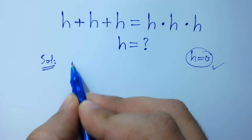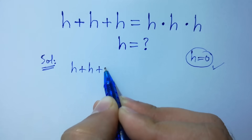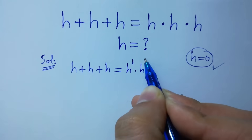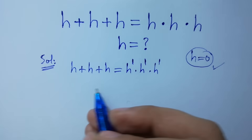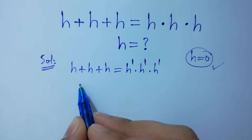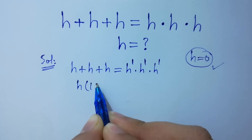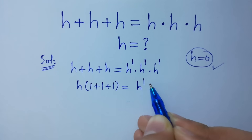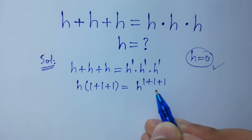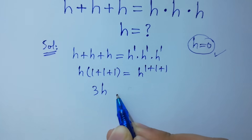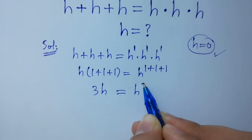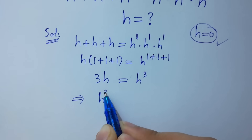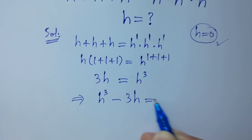We have h plus h plus h equal to h to the power 1 times h to the power 1 times h to the power 1. If we factor out h on the left side, we have h times (1 plus 1 plus 1), and on the right side h to the power (1 plus 1 plus 1). We get 3h equal to h cubed, which is the same as h cubed minus 3h equal to 0.